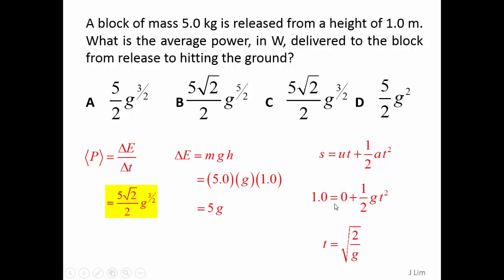So dividing 5G by the square root of 2 over G, we get the answer as C.